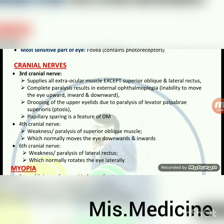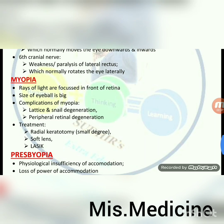Pupillary sparing is a feature of diabetes mellitus in third nerve palsy. Fourth cranial nerve (trochlear): weakness or paralysis of superior oblique muscle, which normally moves the eye downward and inward. Sixth cranial nerve (abducens): weakness or paralysis of lateral rectus, which normally rotates the eye laterally.